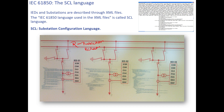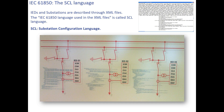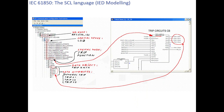Each IED — IED1, IED2, and IED3 — will have some control functions and some protection functions. You may also have measurement values like MMXU or MMXI. This is a screenshot of the PCM software of an ABB relay. In the PCM application configuration, which is the IED configuration tool for ABB software, this tool is used for configuration of 61850 in ABB relays.